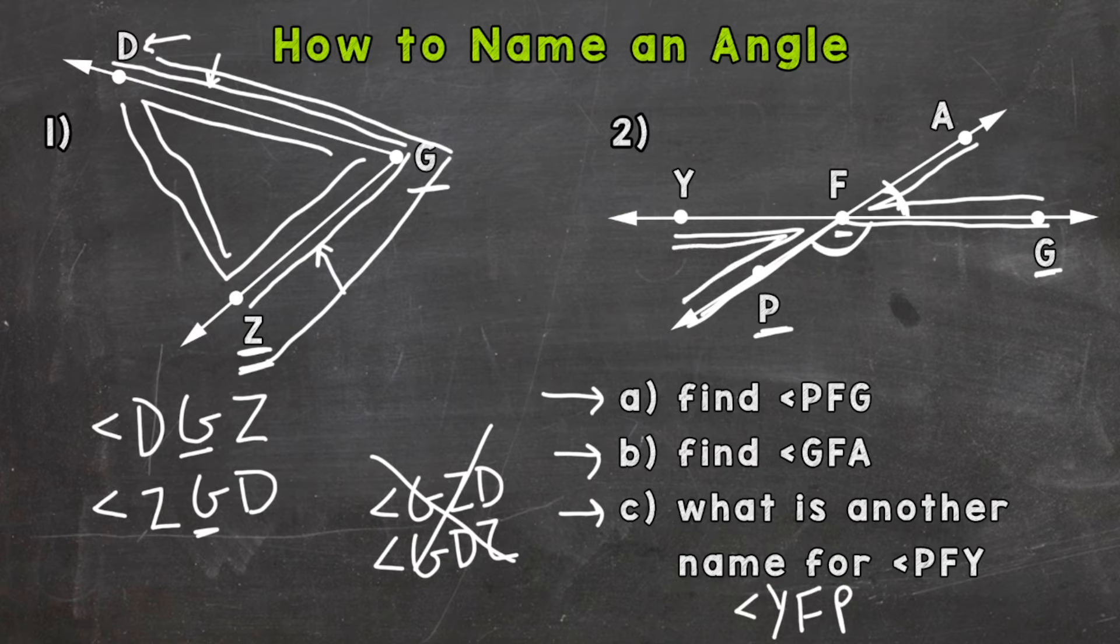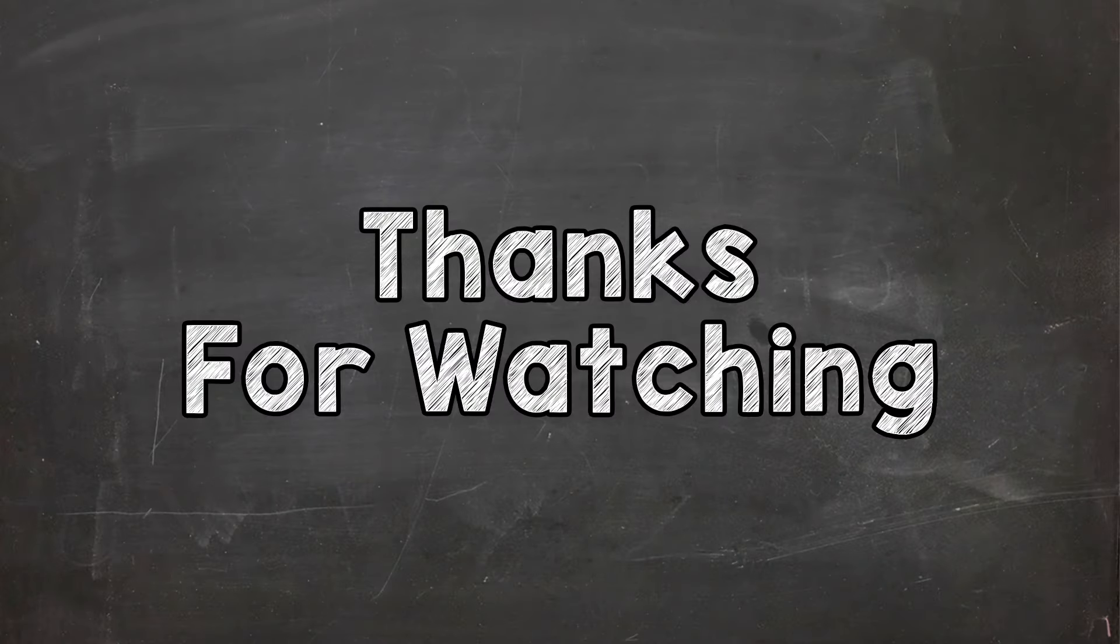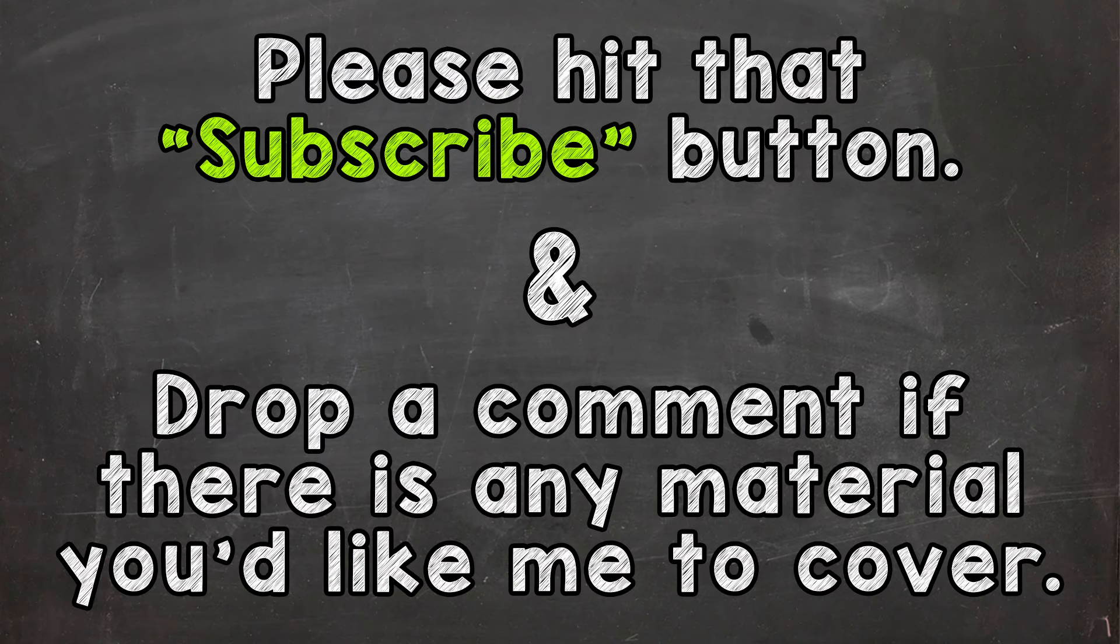So there you have it—that's how to name an angle. We find two points on the lines or line segments and we also find that vertex, and we always put the vertex, the letter for the vertex, in the middle of our name. Hopefully that helped. Thanks so much for watching. Until next time, peace.